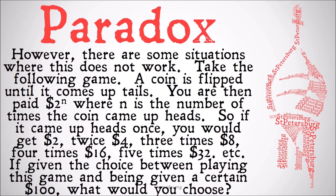However, there are some situations where this does not quite work, or at least our intuitions disagree with the results of this analysis. Take the following game: a coin is flipped over and over again until it comes up tails, and you count the number of times you get heads before you get tails. You are then paid out two to the n dollars, where n is the number of times the coin came up heads. So if you flipped it three times heads and then tails, you would be paid out $8, since two to the third is eight.